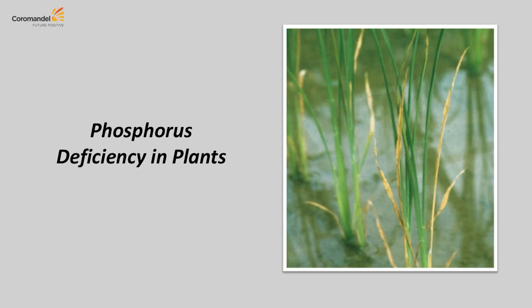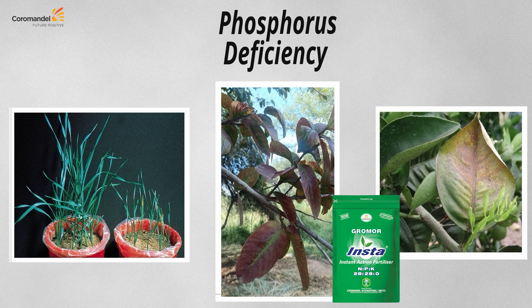Phosphorus deficiency appears in the lower part of the plant because phosphorus is highly mobile in the plant, though less mobile in the soil. Stunted growth, less vigor, and lesser appearance occur. In some plants, bronzing of the lower leaves appears — shown here for guava and citrus. Because of the bronzing of the leaf, yield and quality become restricted.